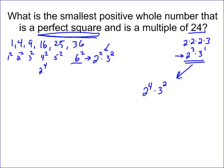This is a perfect square because all the powers are even. It's a multiple of 24 because you can take out the 3 twos and the 1 three and get 24. So the answer is 2 to the 4th times 3 to the 2nd, which is 16 times 9, which is 144.